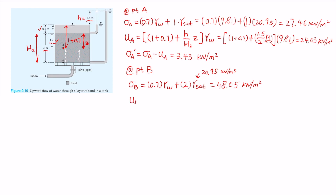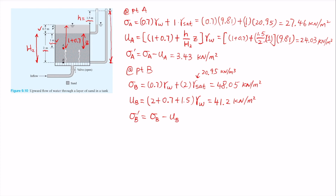For pore pressure at B, we use the height of the water column in the piezometer standpipe at point B. That total distance is 2 + 0.7 + 1.5, so the pore pressure at B equals 4.2 meters times gamma water, giving 41.2 kilonewtons per meter squared. The effective stress at B is the difference between total stress and pore pressure: 48.05 − 41.2 = 6.85 kilonewtons per meter squared.